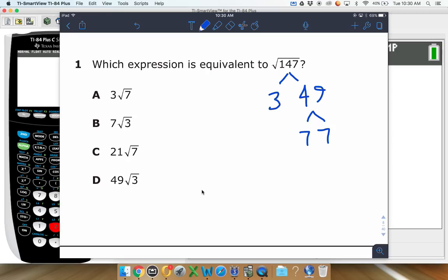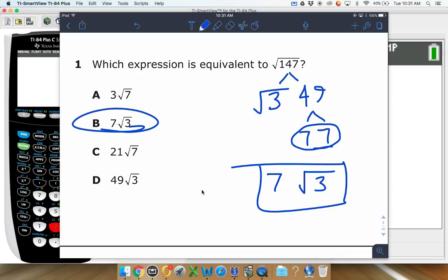With square roots, we're looking for perfect squares. We're looking for things that are in groups of two. You have a group of sevens right there. So we're going to pull that outside the radical. And then the other things that don't have a pair inside the radical is the leftover part. So three stays inside of the radical. That will be 7 square root of 3, which is answer B right there.